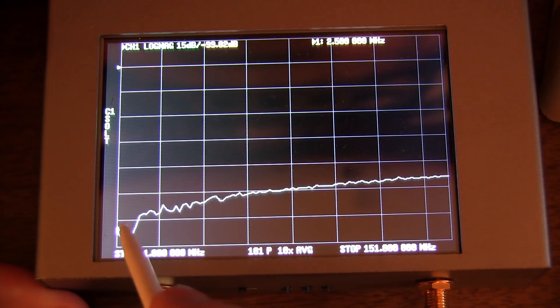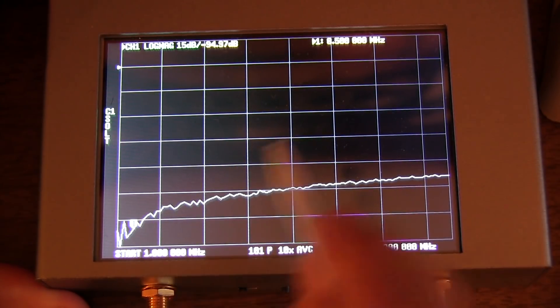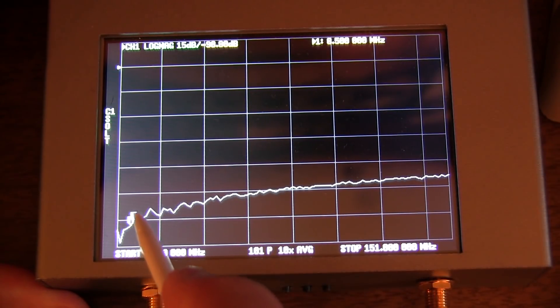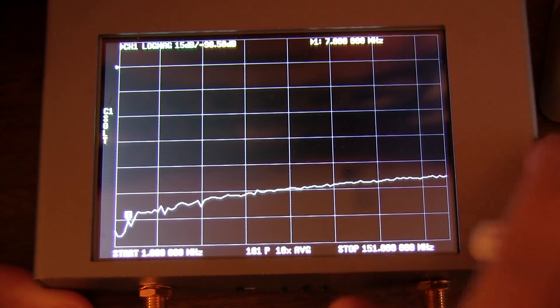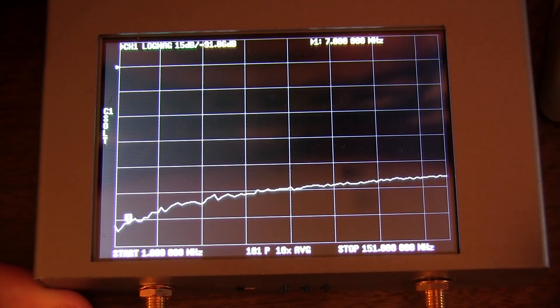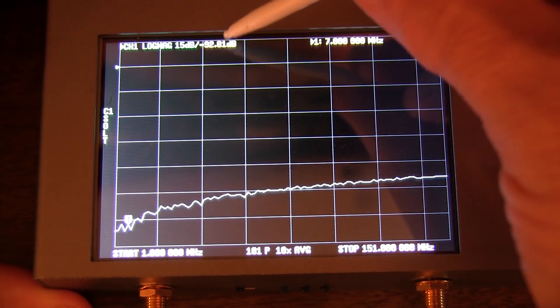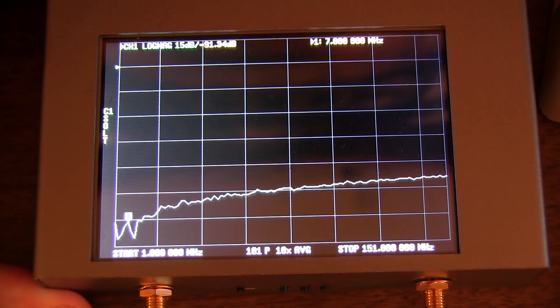And I do a lot of my operating down on the lower portion of HF down around the 40 meter band and things like that. Let's move this over to, there's eight and a half megahertz. Let's move it down a little bit more, five and a half megahertz. Let's see if I can get to, there's seven megahertz. So that's right at the bottom of the 40 meter band. I'm showing better than 90 dB of isolation. And that's actually probably pretty close to the measurement limit of this VNA.